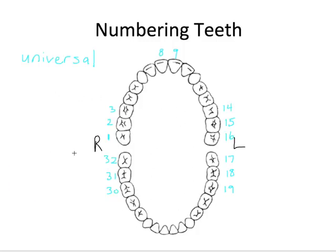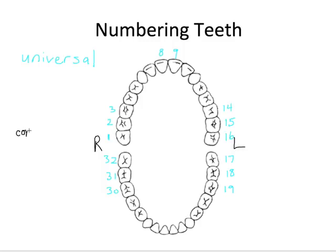Of course, some people like myself are never born with or develop any wisdom teeth. So if you're missing, say, tooth one and tooth 32, you just skip those numbers — the adjacent teeth would still be number two, number three, and so on. You just wouldn't include the missing numbers; they would simply be called congenitally missing teeth. That covers the basics of the numbering system; there are other systems out there, but for this video we'll stick with the universal system.